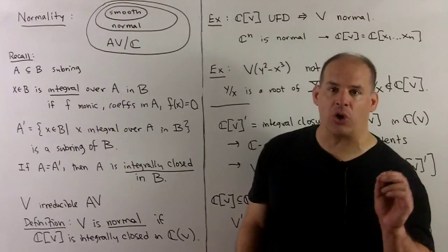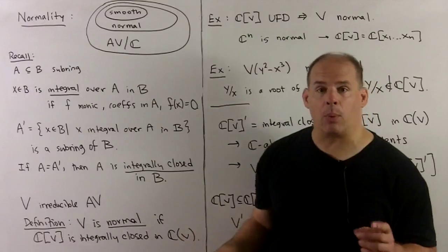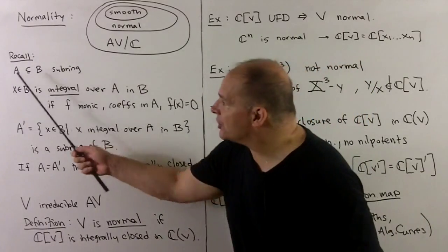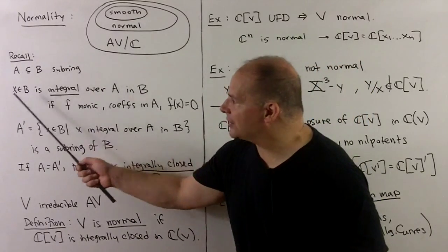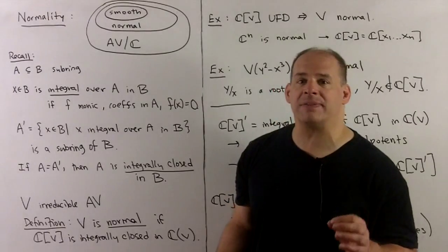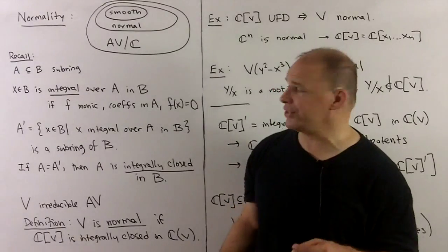Algebraically, normality is just the notion of integrality. If we have A a subring of B, I'll say x in B is integral over A if x satisfies a monic polynomial with coefficients in A.